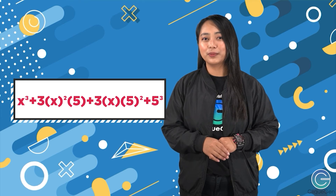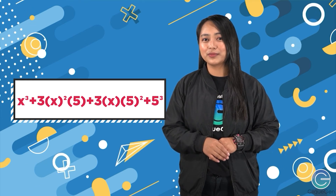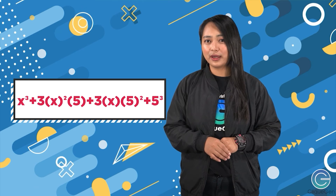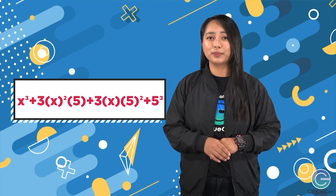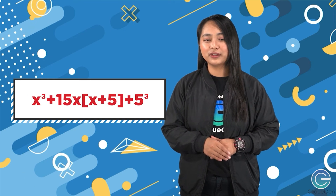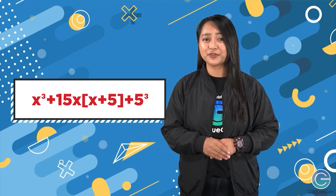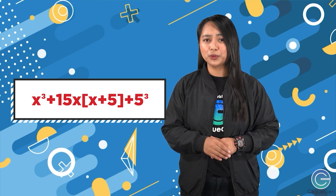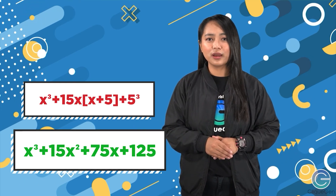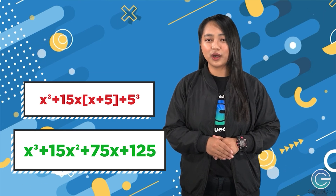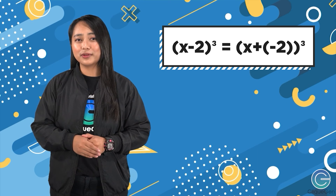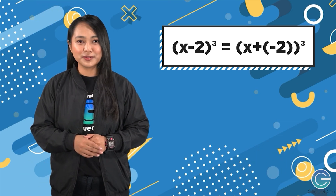Using the other formula it would be x cubed plus 3 times x squared times 5 plus 3 times x times the square of 5 plus 5 cubed. Expanding fully, that gives x cubed plus 15x squared plus 75x plus 125.